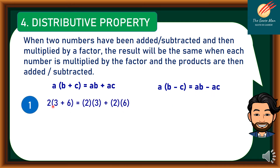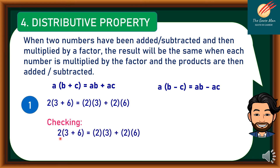For our example, 2 times (3 plus 6) is the same as distributing 2, giving us 2 times 3 plus 2 times 6. To check: 2 times 9 equals 2 times 3 plus 2 times 6, so 18 equals 6 plus 12, which equals 18. So 18 equals 18.